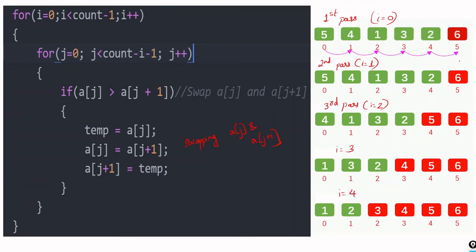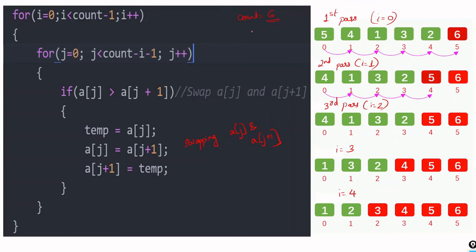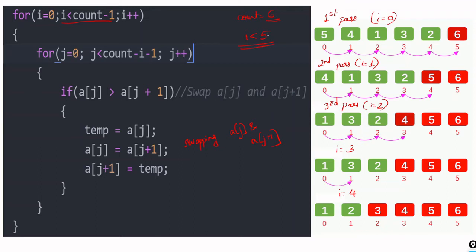The total number of elements here is 6. If count is the number of elements — say 6 — the number of passes required is 5. The limiting condition is i less than count minus 1, that is i less than 5, meaning i goes from 0 to 4, for a total of 5 passes.